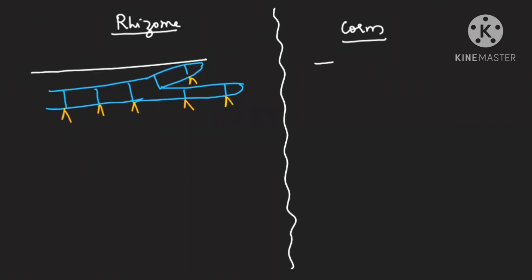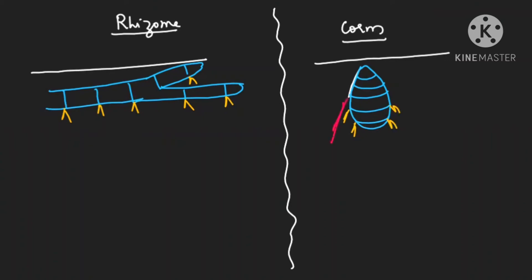In case of corm, it is not horizontal — corm is actually vertically oriented. It bears circular nodes with very short internodes. Adventitious roots come only from the lower node. Apart from adventitious roots, it also has special contractile roots (also known as pull roots) which maintain the corm at a particular depth — not too deep and not too shallow.